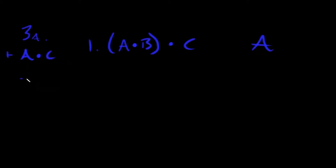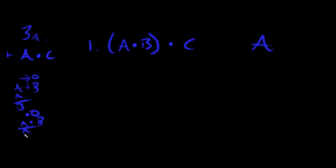Let me remind you of the three rules we can use. Arrow-out: if you get an arrow and you get a left-side match, you can get the right side. And-out: if you've got dots, you can break them apart. And then we've got and-in: if you've got two separate things, you can bring them together.